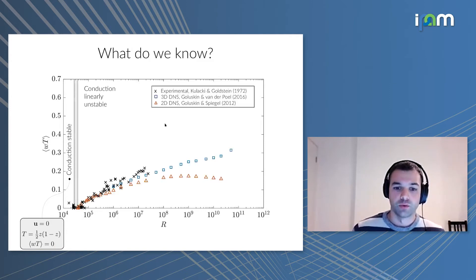On the other hand, when the Rayleigh number is large enough, larger than about 37,000, conduction is linearly unstable. In this case, we do get convection and the heat flux increases as we raise the Rayleigh number. Here I'm showing some experimental data, numerical data in 3D and 2D. As I keep increasing the Rayleigh number, the 3D and 2D data start disagreeing. In 3D, the heat flux keeps increasing, but in 2D it increases then looks like it's turning back down.